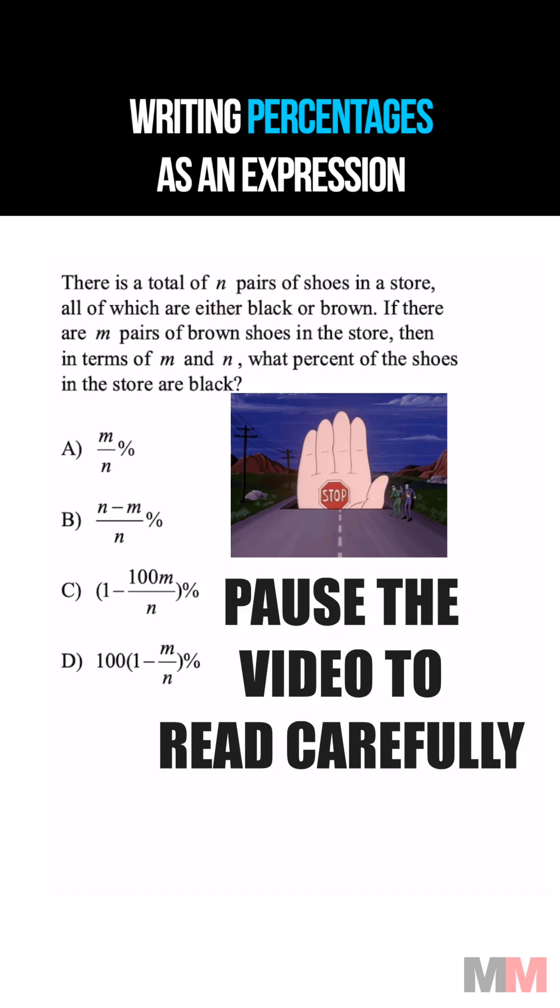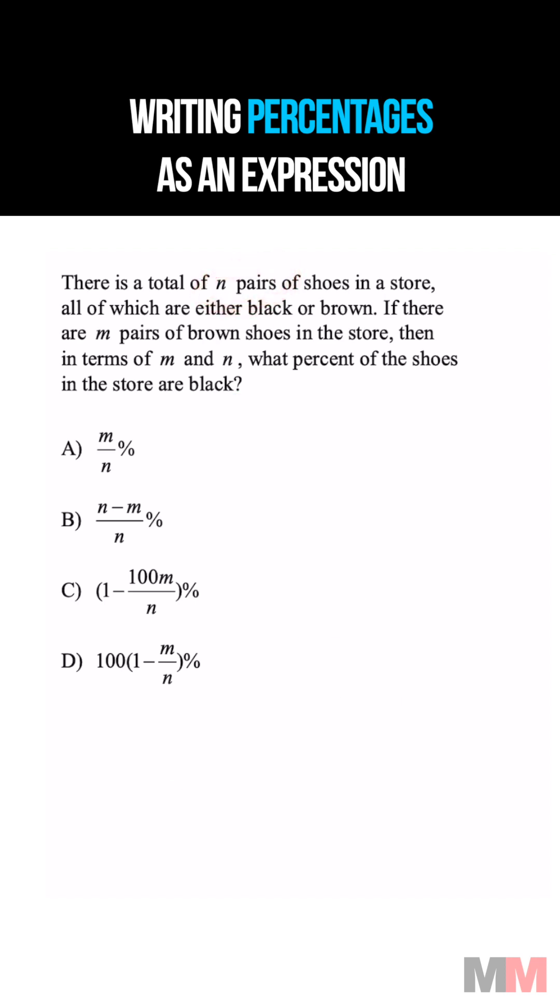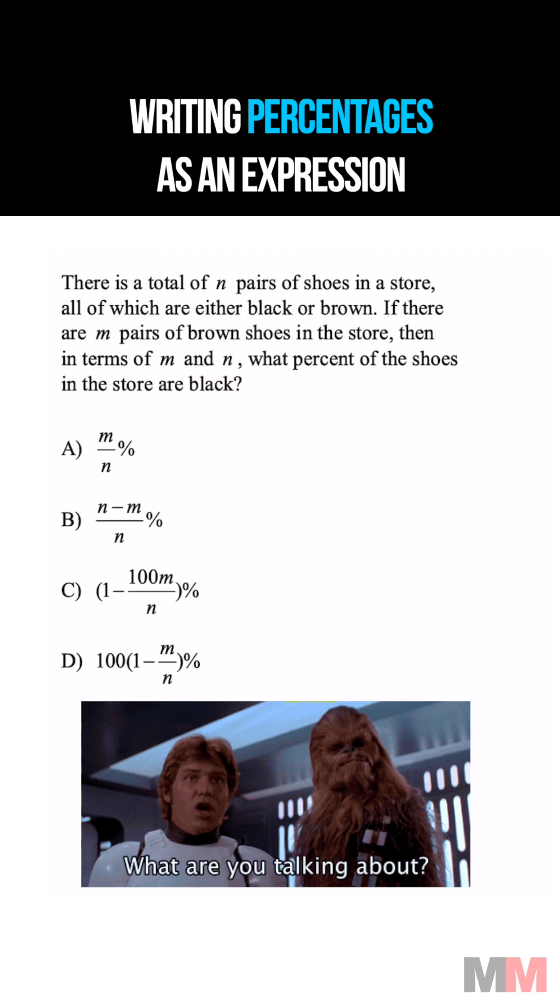You might have to pause this one to read it. We have n pairs of shoes at the store that are either black or brown. If there are m pairs of brown shoes, then in terms of m and n, what percent of the shoes are black?